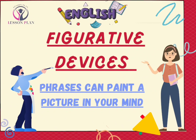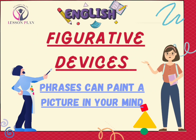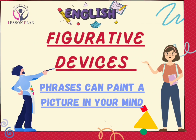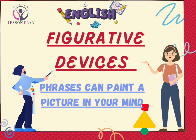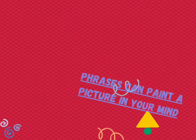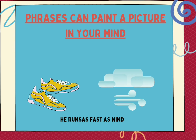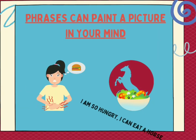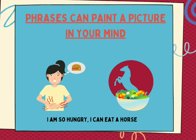Have you ever noticed how some words and phrases can paint a picture in your mind? Consider these examples: He runs as fast as wind. I am so hungry I could eat a horse. The moon whispered secrets to the stars.